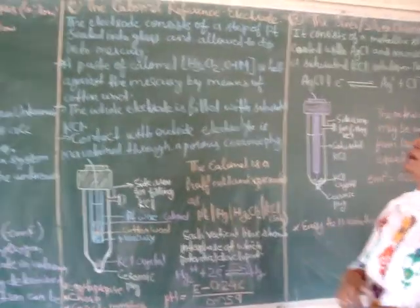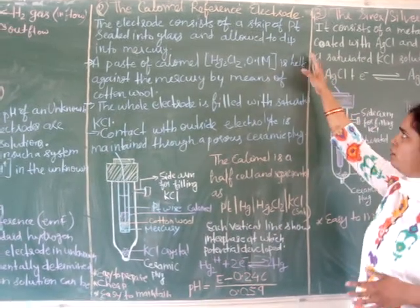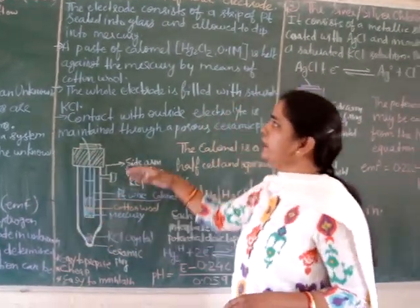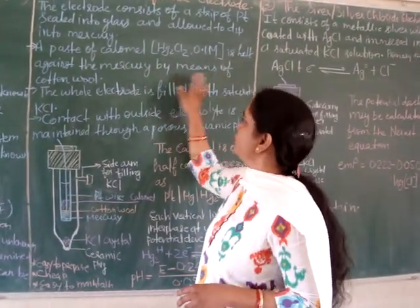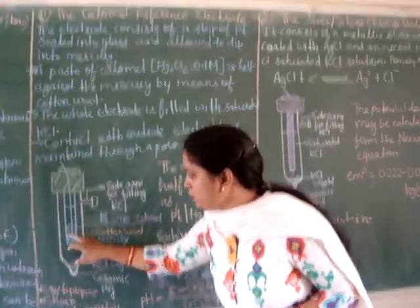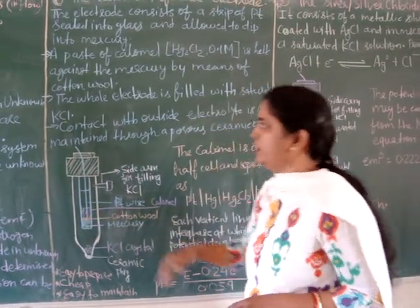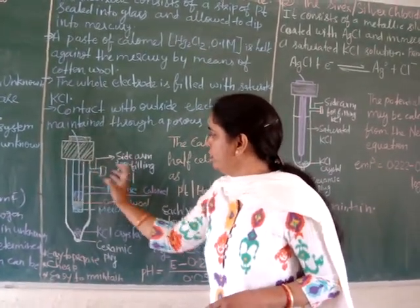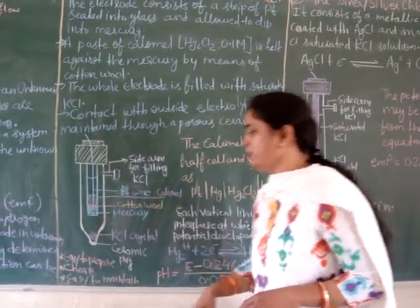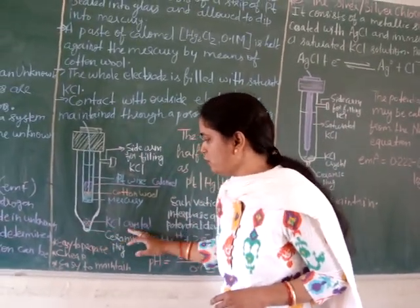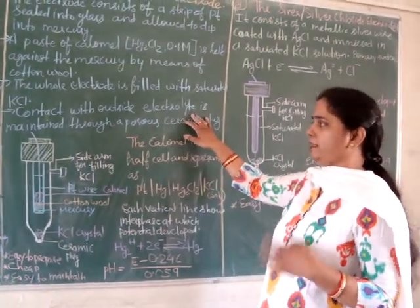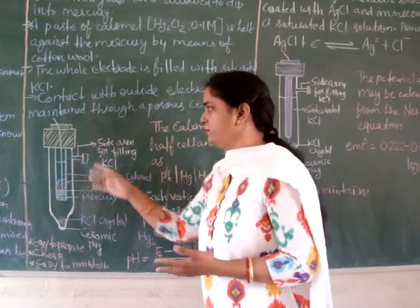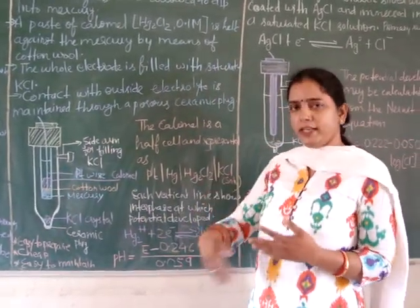The second reference electrode is the calomel reference electrode. This electrode consists of a strip of platinum sealed into glass and allowed to dip into mercury. The paste of calomel, that is mercury chloride, is held against the mercury by means of cotton wool. The whole electrode is filled with saturated KCl. Here is the side arm for filling the potassium chloride solution, and potassium chloride crystals are also present. Contact with the outside electrolyte is maintained through a porous ceramic plug.